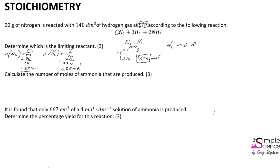A question like this would be marked with one mark for calculating the number of moles of each reactant present. A second mark is given for using the ratio to determine how much of the second reactant would be required to use the first reactant fully, or vice versa. The final mark is for correctly identifying the limiting reactant.